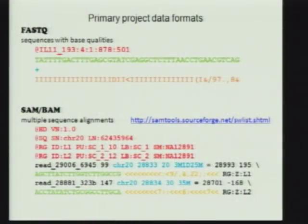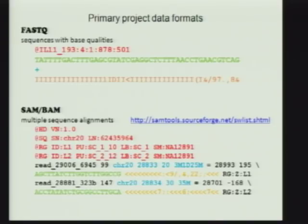The SAM-BAM format is for how the alignments actually look. In the text version of the data, which is SAM, you would see a file. This is just the alignment of one read, where you have some header information at the top in red, alignment information in blue with the CIGAR string followed by sequence, and the quality scores.